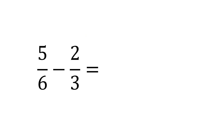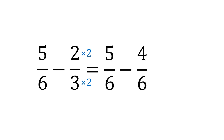We do the same thing for subtraction. We've got five sixths minus two thirds. Three goes into six twice, so we multiply the top and bottom of two thirds by two to create an equivalent fraction of four sixths. Then we use our method: five sixths minus four sixths is one sixth.